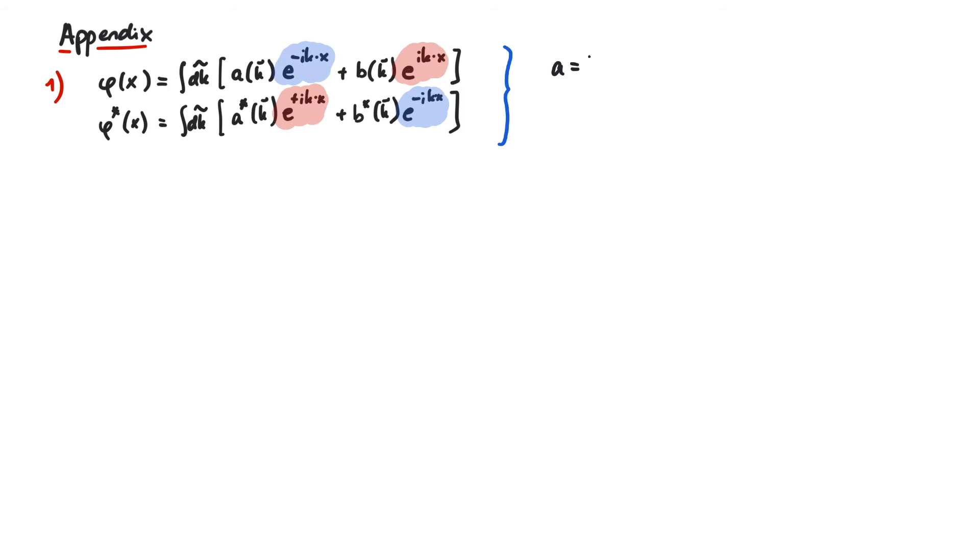Now let's talk about the promised calculations. First, we claimed that b equals a star as a consequence of phi being real. This can be seen by writing down phi and its conjugate. If we look at phi dagger and want that it is equal to phi, the coefficients in front of the exponential functions must be the same. This means b equals a star and b star equals a.